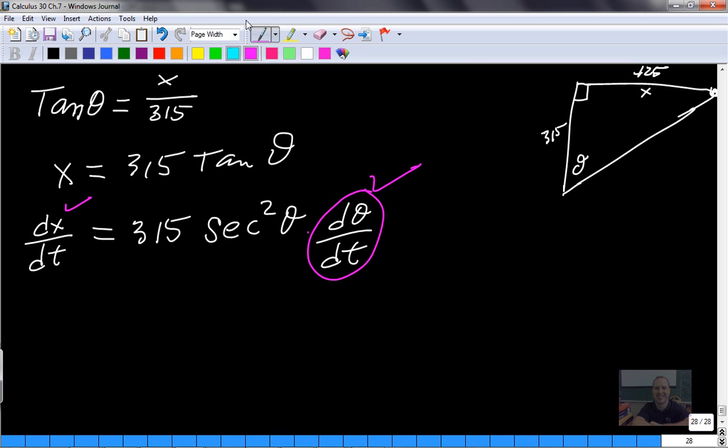So we have to calculate what theta is so we can put theta in there. So dx/dt equals 315 secant squared, and I'm going to leave this blank for now. And I'm going to put the rate of change here as 2 pi right there. Now, how do we solve for theta? Well, we are now dealing with the moment in time that is in question where this is actually 425.